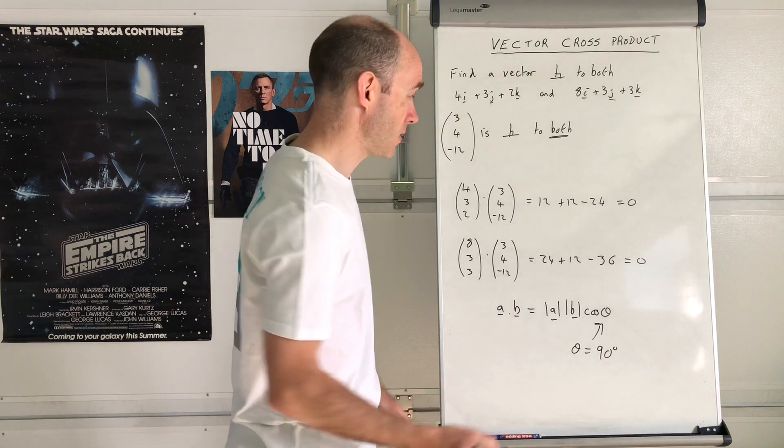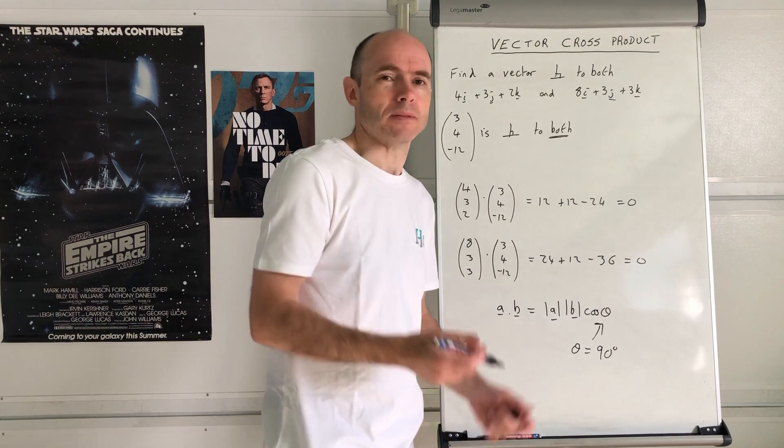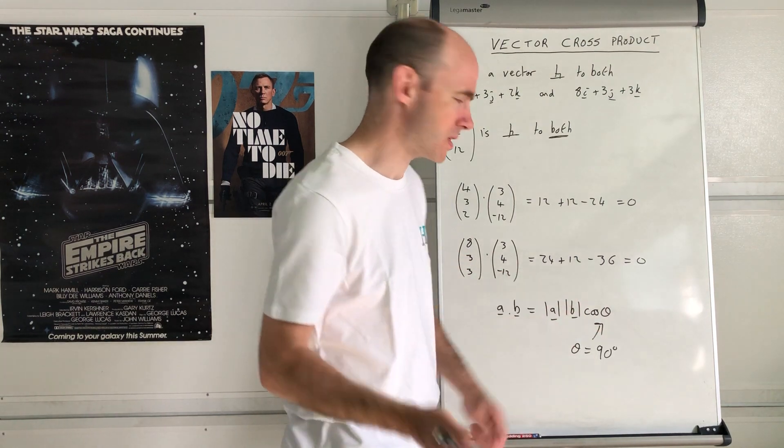That means theta must be 90 degrees because cos 90 degrees is 0. They're demonstrating why it works out - they're perpendicular to each other. But you don't actually need to show it really, it's more of a demonstration.